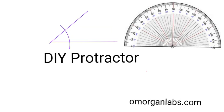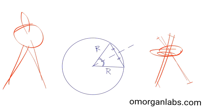Hello, this is O Morgan from omorganlabs.com. Today we're going to make a do-it-yourself protractor. Basically, you don't need one of these—you can make one yourself. All you need is a compass and a straight edge. You can buy a compass from the store or you can use two chopsticks, whatever you need to make a fixed point in space.